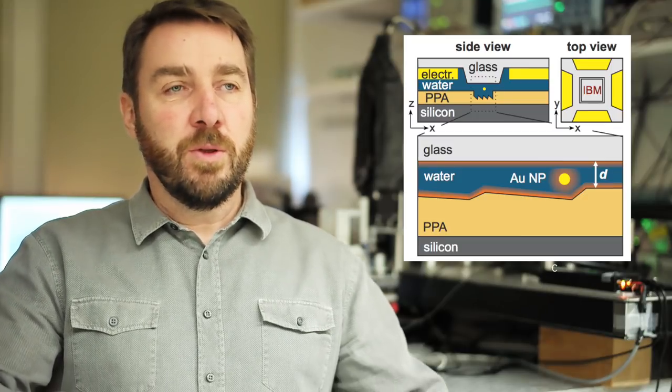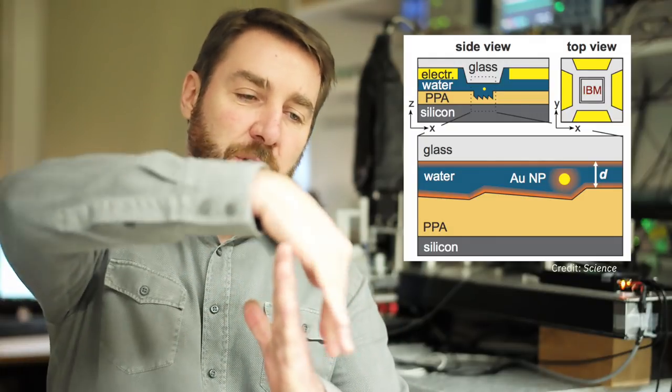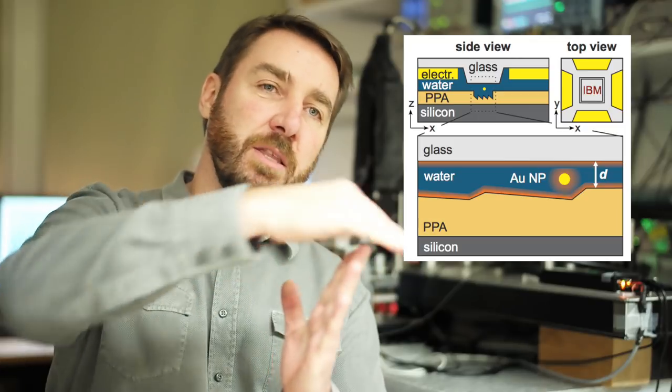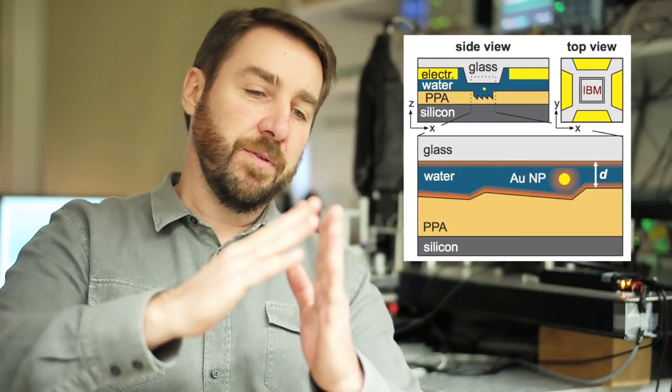Now in order to get this directed motion you need an asymmetric feature in your device. So in this case it's similar like a ratchet like a screwdriver, where you have these teeth and the ratchet slides along the teeth and locks in one direction but can slide in the other direction. Similar in our Brownian motor implementation, we have similar teeth.